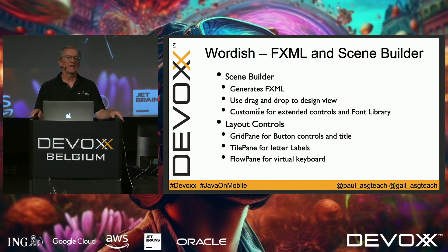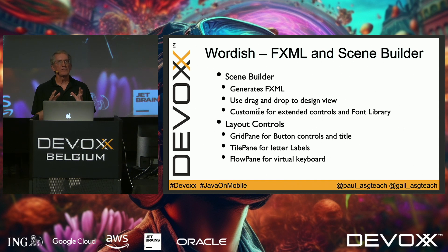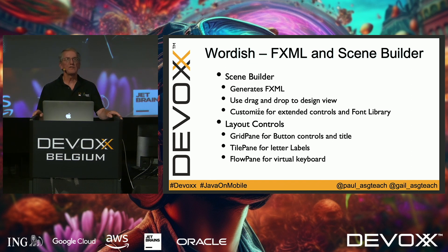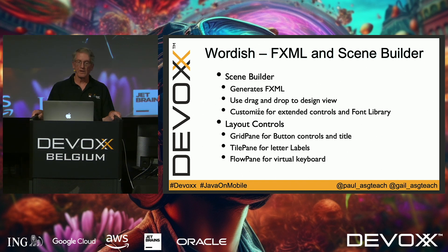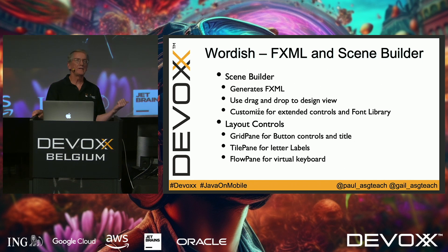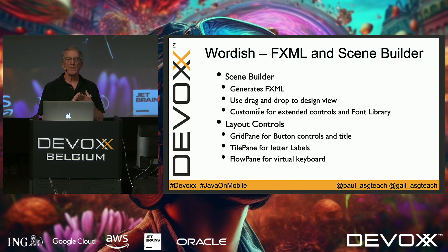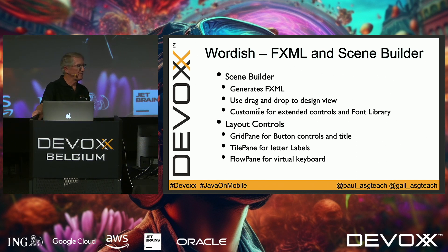We started the Wordish application with SceneBuilder, a drag-and-drop tool from Gluon that generates FXML — not Java. It's really nice because you write less Java code since the FXML declarative language handles instantiating and configuring controls. SceneBuilder also lets you customize your own controls and load your own font libraries. For Wordle, the layout uses a GridPane for button controls and title, a TilePane for letter labels, and a FlowPane for the virtual keyboard.